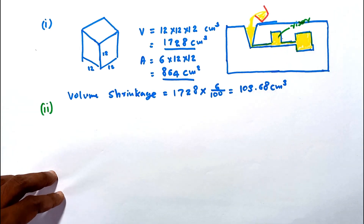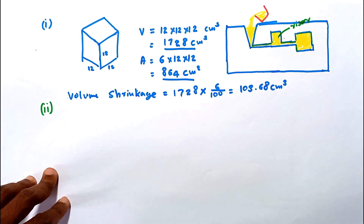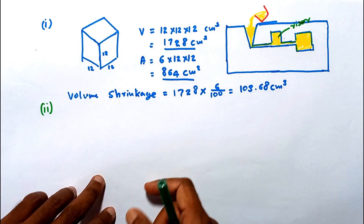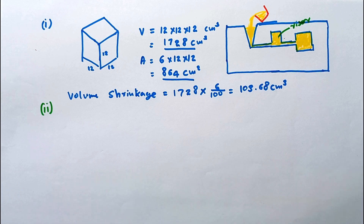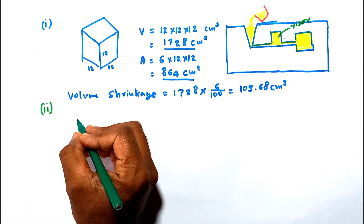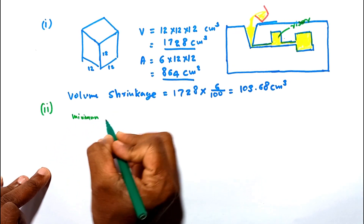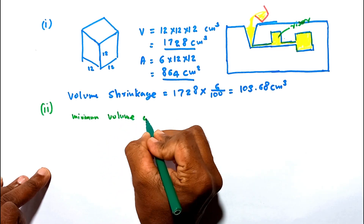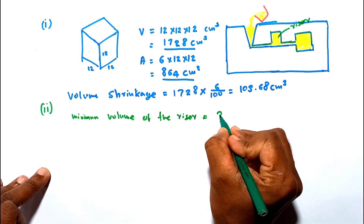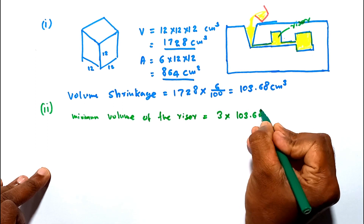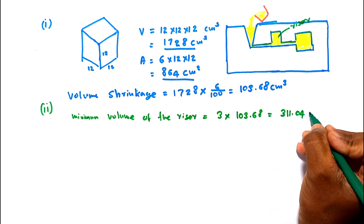In this calculation, we need to satisfy the first two considerations. For the first consideration, the minimum volume of the riser should be at least 3 times the shrinkage volume. So the minimum volume of the riser equals 3 × 103.68 = 311.04 cm³. From this condition, we can calculate the required height and diameter for the cylindrical riser.